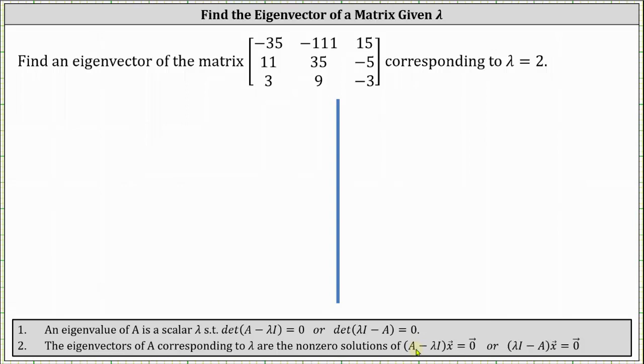This equation involves matrix A minus the product of λ and the identity matrix I, times vector x, where x is an eigenvector, equals the zero vector.